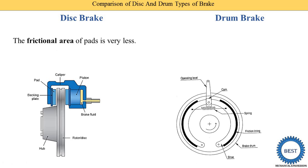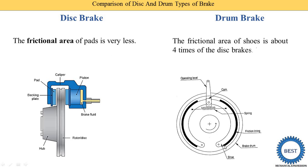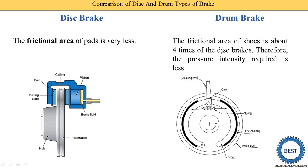The frictional area of the pad in a disc brake is very small. In a drum brake, the friction area is very high — the contact area between the friction linings and the drum is much larger. The frictional area of the shoe is about 4 to 5 times that of the disc brake. Therefore, the pressure intensity required in a drum brake is less.